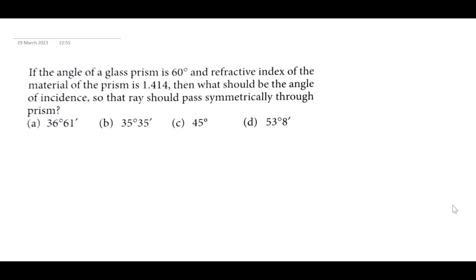The problem states: if the angle of a glass prism is 60 degrees and the refractive index of the material of the prism is 1.414, then what should be the angle of incidence so that the ray passes symmetrically through the prism? Let us first draw the glass prism.